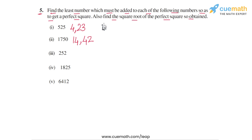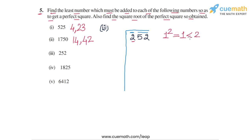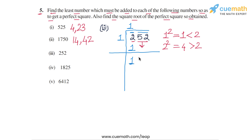Now for part 3, the number is 252. We apply the division method, putting bars over 52 and 2. In the first step, the largest digit whose square is ≤ 2 is 1, because 1² = 1 < 2, while 2² = 4 > 2. So the first divisor and quotient digit are both 1. 1 × 1 = 1. Subtracting: 2 − 1 = 1. Bringing down the digits 5 and 2, we get 152 as the dividend for the second step.